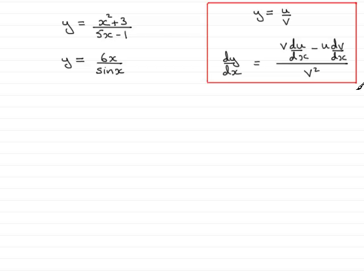I'll just show you what that rule is — we'll bring it up here. Now if I've got y equals u over v, where u and v are two functions of x. So in this example, u would be x squared plus 3, and the v at the bottom of the fraction would be 5x minus 1. And similarly in this example, u would be 6x and v would be sine x — two functions of x being divided by one another. Well, if you have that situation, it can be shown that dy by dx is equal to the bottom of the fraction multiplied by the differential of the top of the fraction, du/dx, minus the top of the fraction times the differential of the bottom of the fraction, all divided by the bottom of the fraction squared.